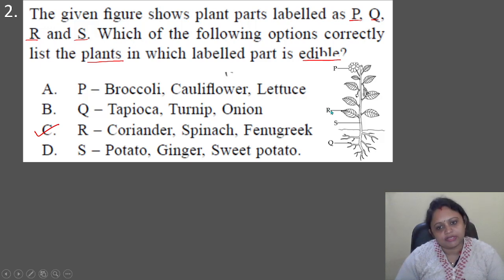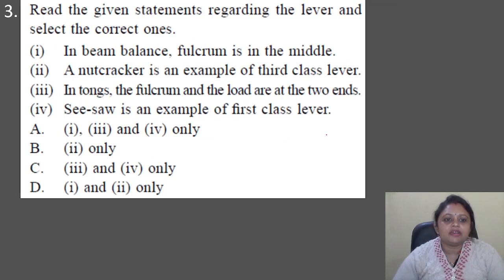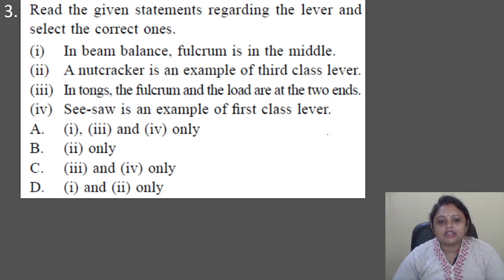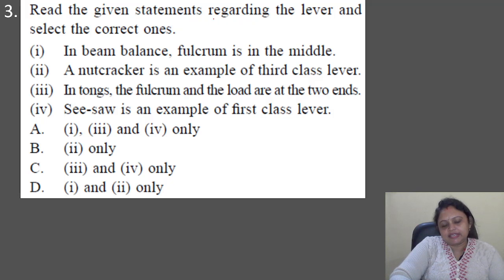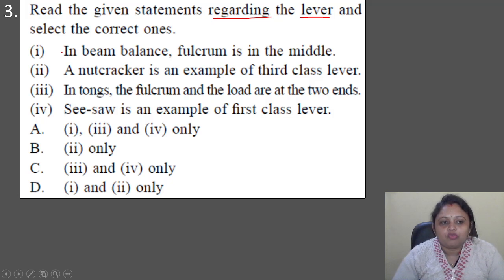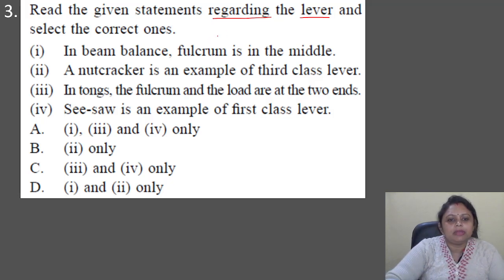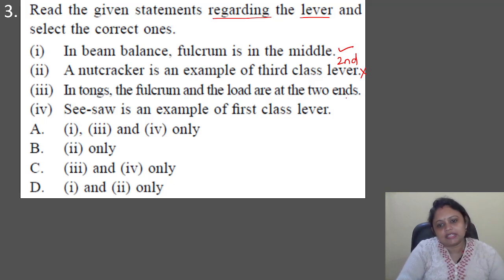Next question: read the given statements regarding the lever and select the correct ones. Statement 1: in a beam balance, the fulcrum is in the middle. Statement 2: a nutcracker is an example of a third-class lever. Statement 3: in tongs, the fulcrum and the load are at the two ends. Statement 4: a seesaw is an example of a first-class lever. Statement 1 is correct. Statement 2 is wrong — a nutcracker is a second-class lever. Statements 3 and 4 are correct. So the answer is option A: one, three, and four only.